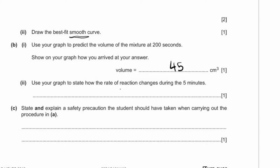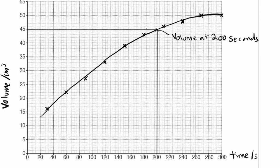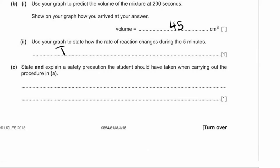Use your graph to state how the rate of reaction changed during the five minutes. For the first part of the graph, the rate was pretty steady — the amount increased by a similar amount for each reading. But at about 200 seconds, the amount of foam increased less, which means the rate of reaction decreased. So: the rate of reaction decreases during the five minutes.